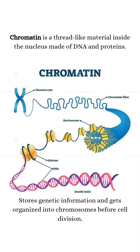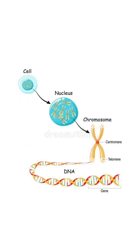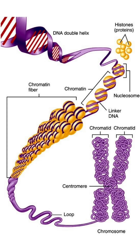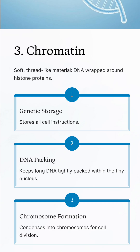Chromatin. Chromatin is a soft, thread-like material inside the nucleus, made up of DNA and proteins. The cell wraps this long DNA string around tiny spools called histones — just like you wrap thread around a bobbin to keep it neat. This neat, wrapped-up DNA and protein is called chromatin. It stores the genetic instructions the cell needs, keeps the long DNA packed tightly so it fits inside the tiny nucleus, and when the cell is about to divide, chromatin condenses into chromosomes, like tightly packed suitcases ready to move.